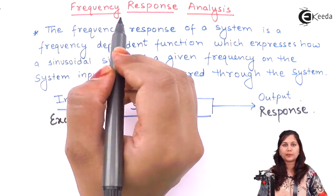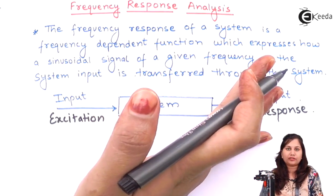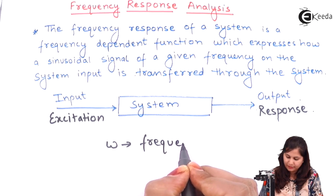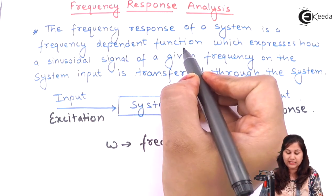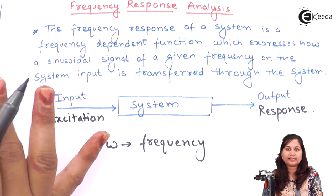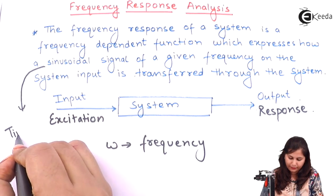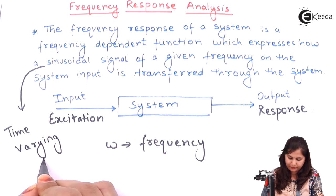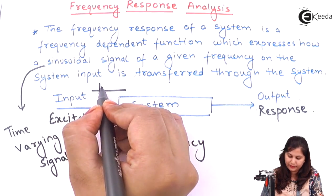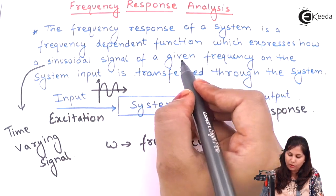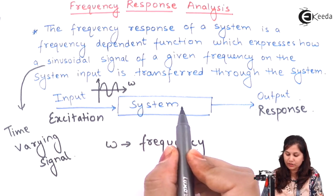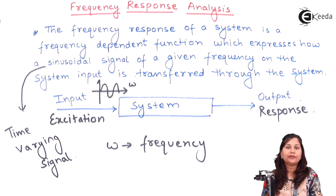For frequency response analysis, the frequency response is a frequency dependent function — it depends on frequency, that is omega, where omega is the frequency. This frequency response expresses how a sinusoidal signal, which is a time-varying signal, of a given frequency omega is given as the system input and how this input is transferred through the system. That is known as the frequency response of a system.